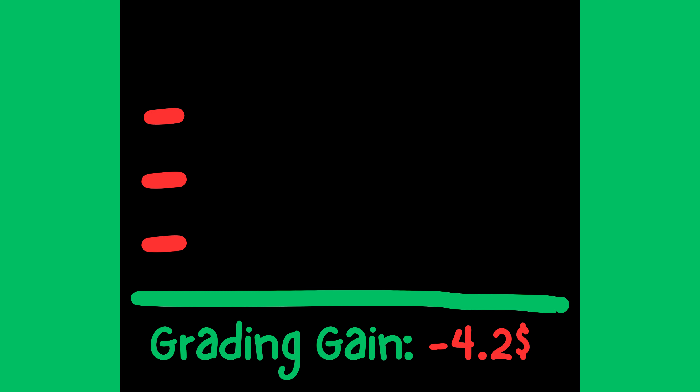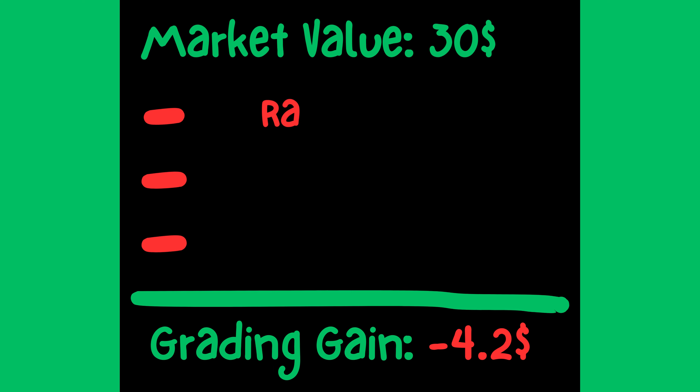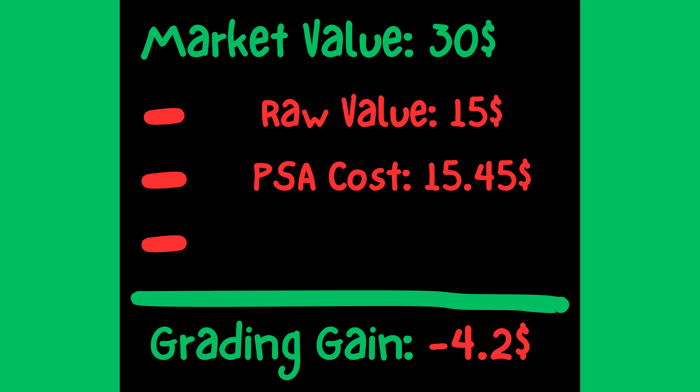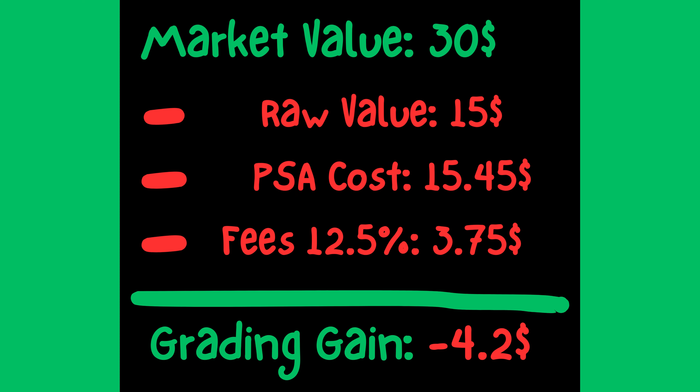Amidst editing I decided I wanted to go into detail about how I consider a grading of a card good or bad. You take the market value — what you sell it for — subtract the raw value, because if you're not making more money selling it graded than raw, you're just wasting time, money, and resources. Then subtract the PSA cost, which for me in this order was $15.45, and then selling fees, which I calculate at twelve and a half percent.